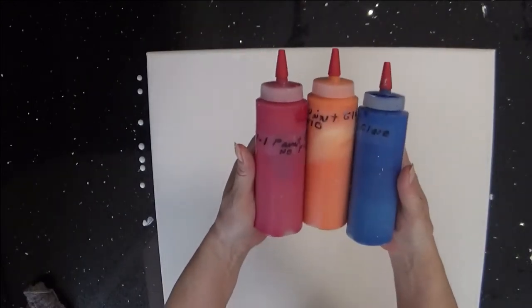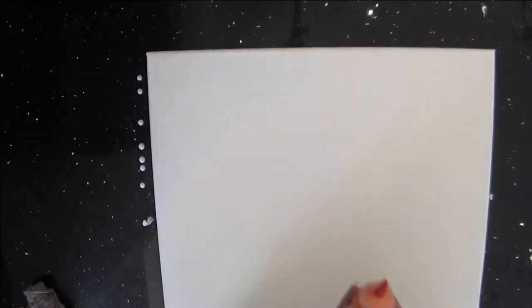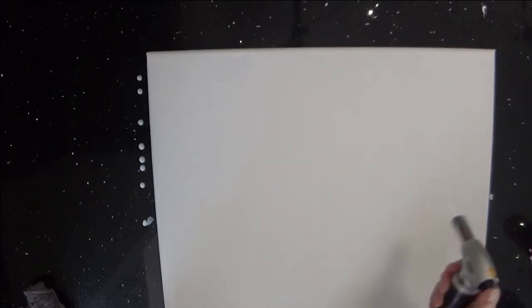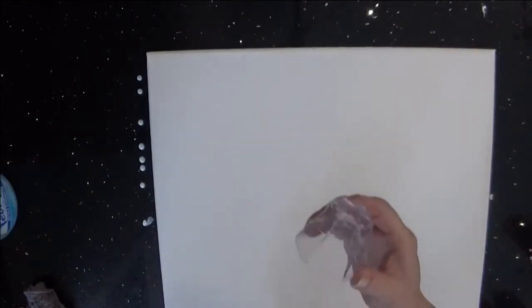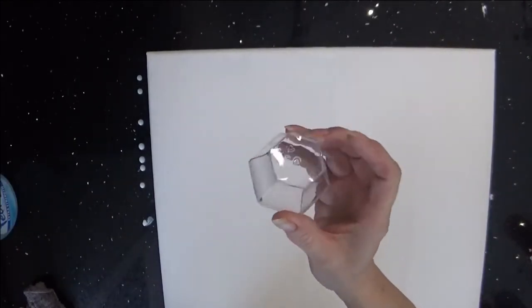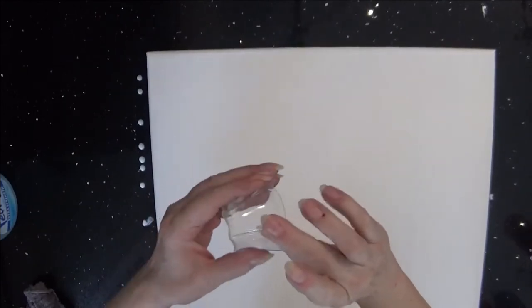For my flowers, I'm going to be using red, orange, and blue. You need to get rid of your air bubbles. I'm going to be using a little dessert cup. It's six sides.